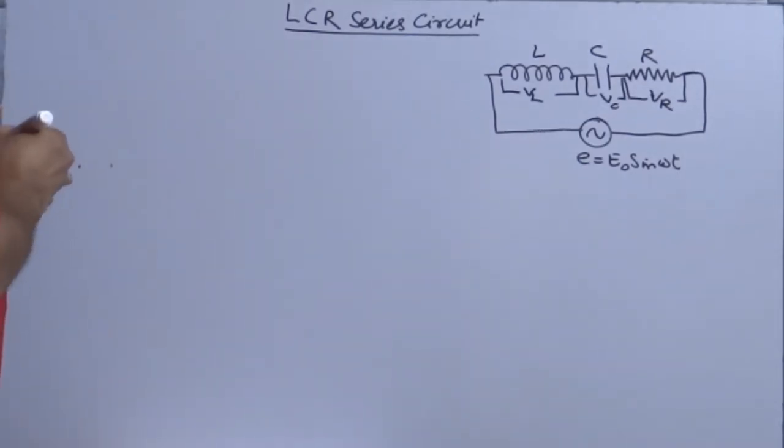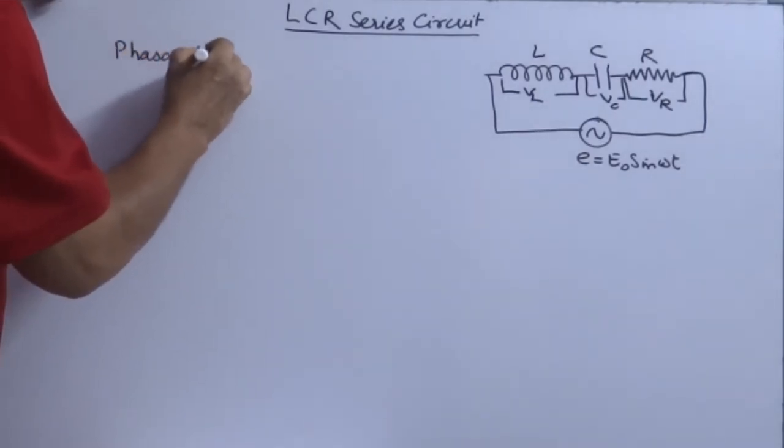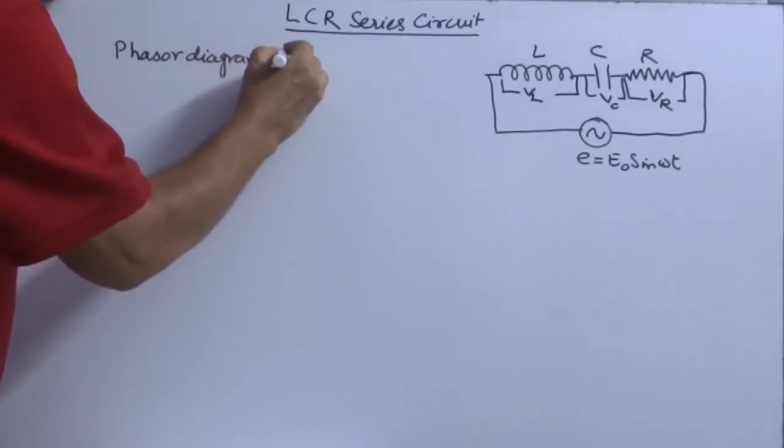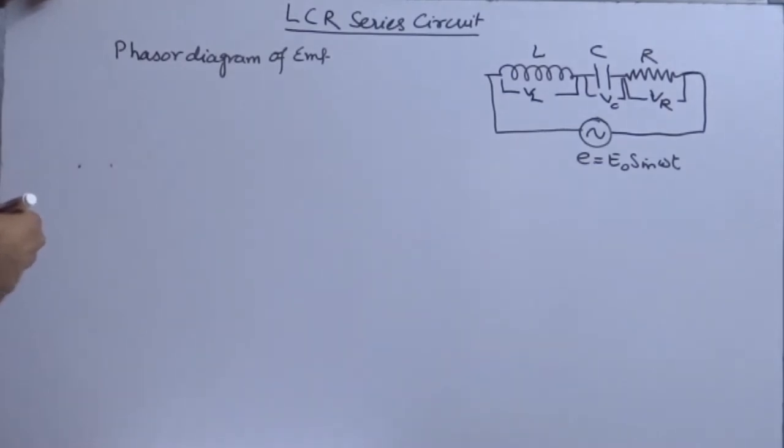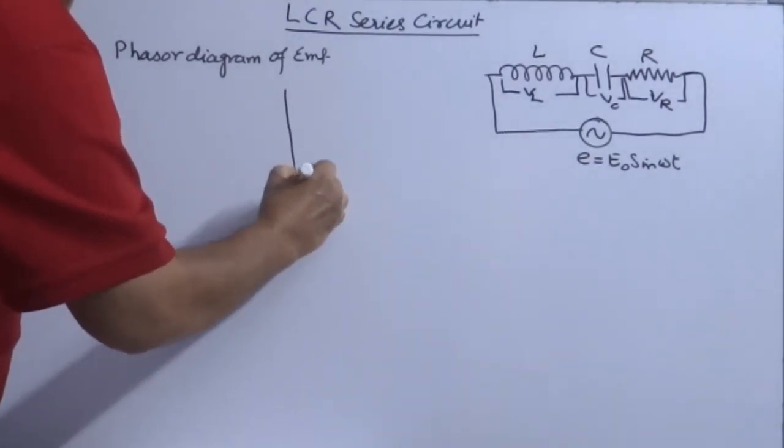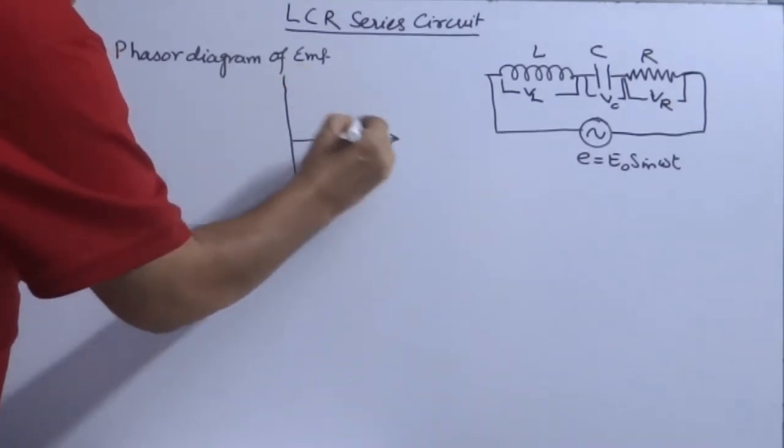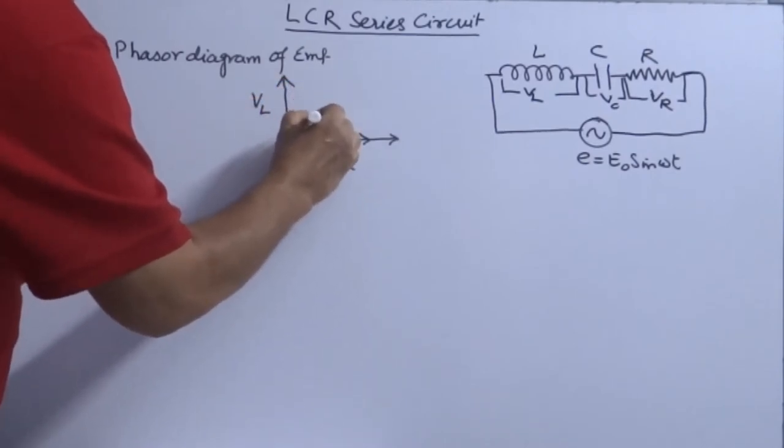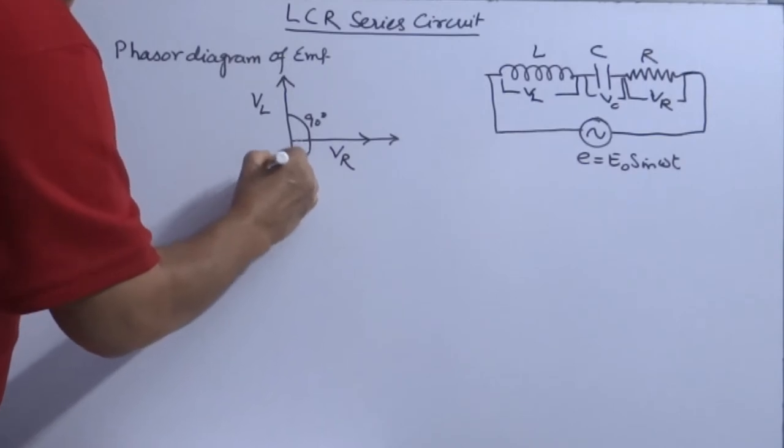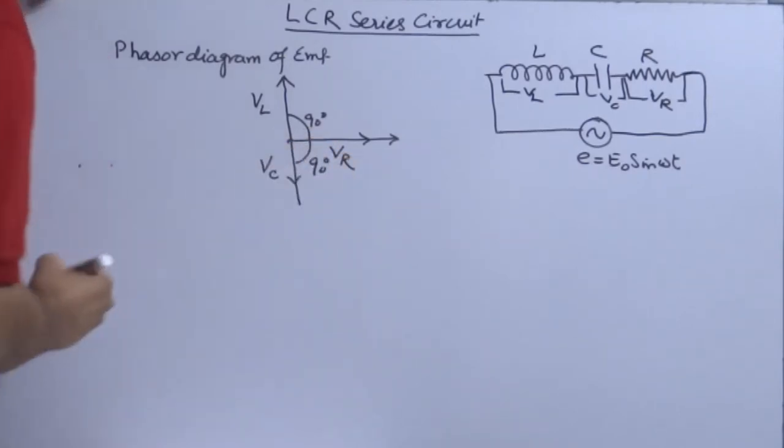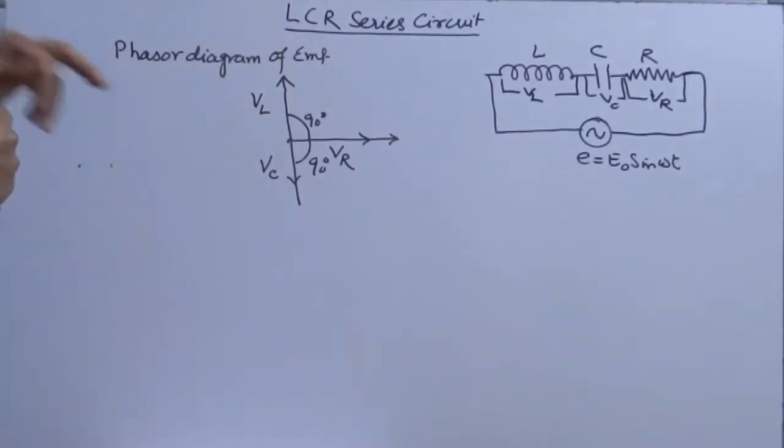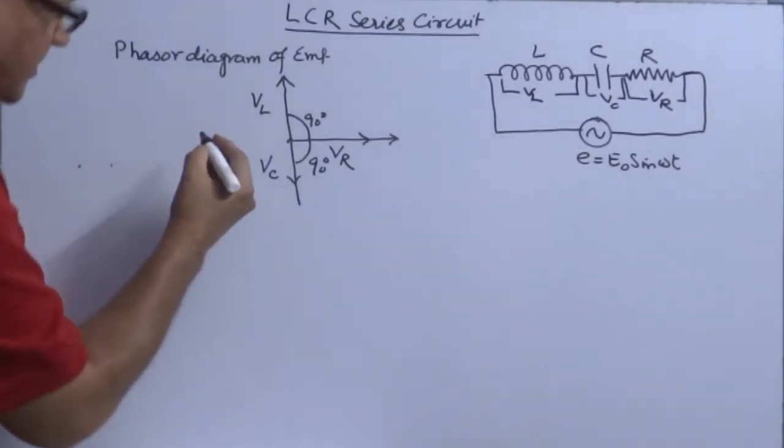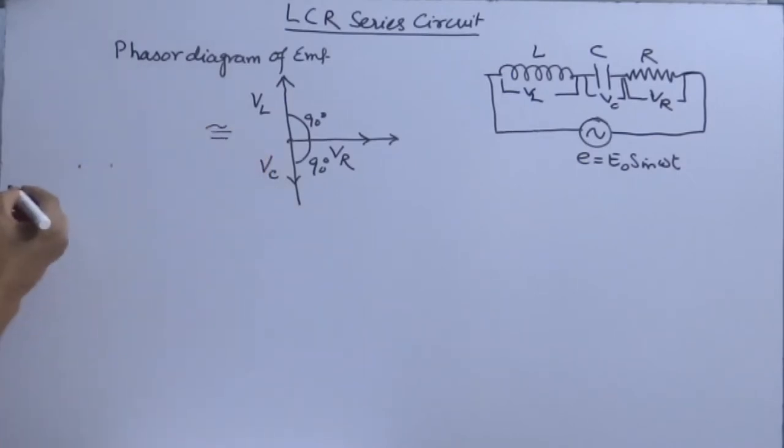So this you have to do on the basis of phasor diagram. Let's see the phasor diagram for EMF with respect to the current. If I take current is flowing in the circuit while the only resistor is there along x axis, then VR will be along this, VL will be at 90 degree this side, VC will be somewhere here down. Along with the phasor angle or phase angle this EMF has become vector quantity.